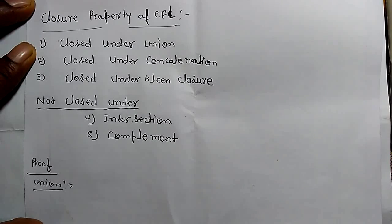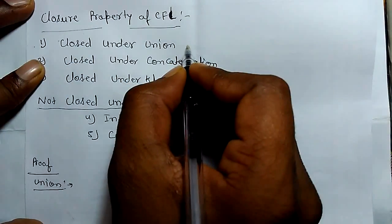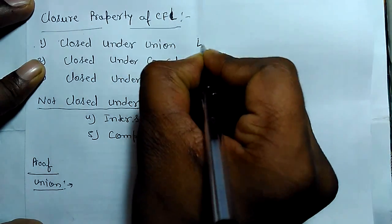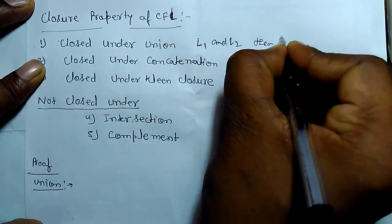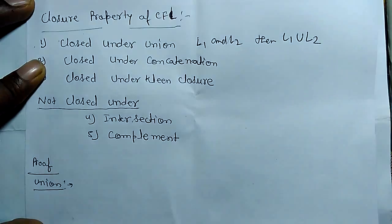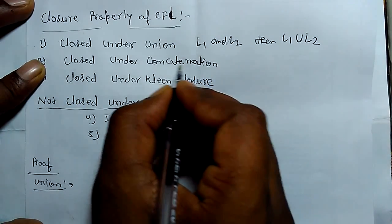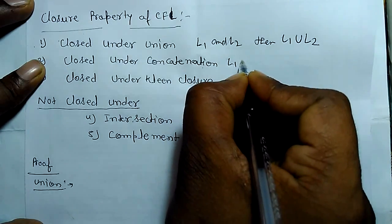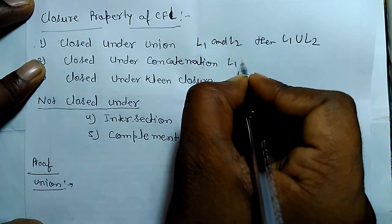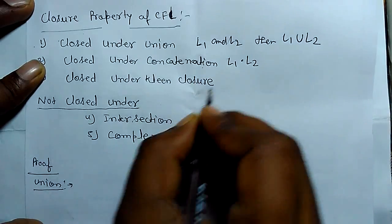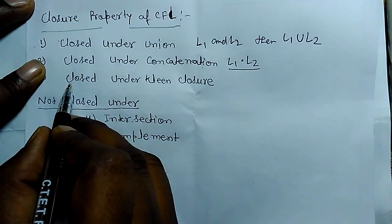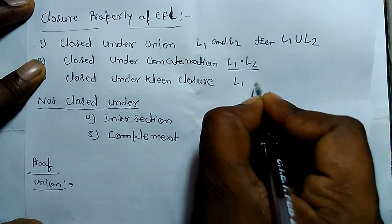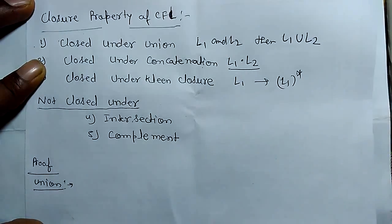Today we are going to learn the closure properties of context free languages. Context free languages are closed under union — if L1 and L2 are two context free languages, then L1 union L2 is also a context free language. They are also closed under concatenation, and closed under closure — if L1 is a context free language, then L1 closure is also a context free language.